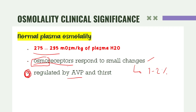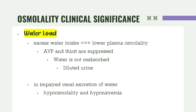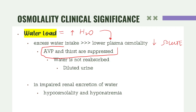Osmolality is regulated by ADH and thirst. In water loading — increased water concentration — there is low plasma osmolarity; ABP and thirst mechanism are suppressed, there is no water reabsorption, and you would expect diluted urine. Hypo-osmolality and hyponatremia rarely happen but are usually observed with impaired renal excretion of water.